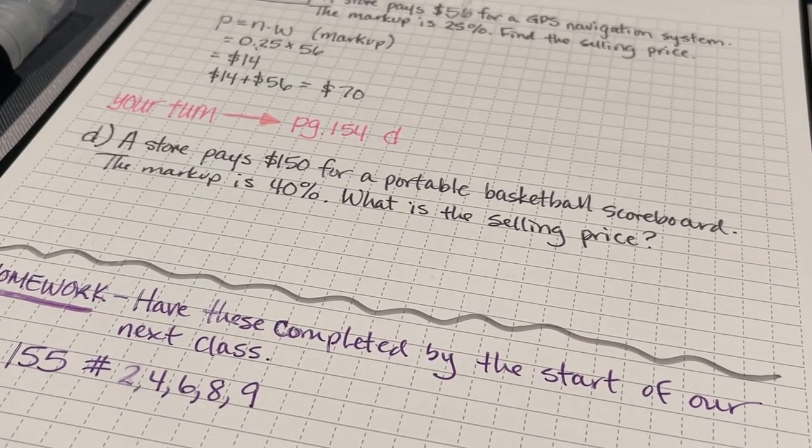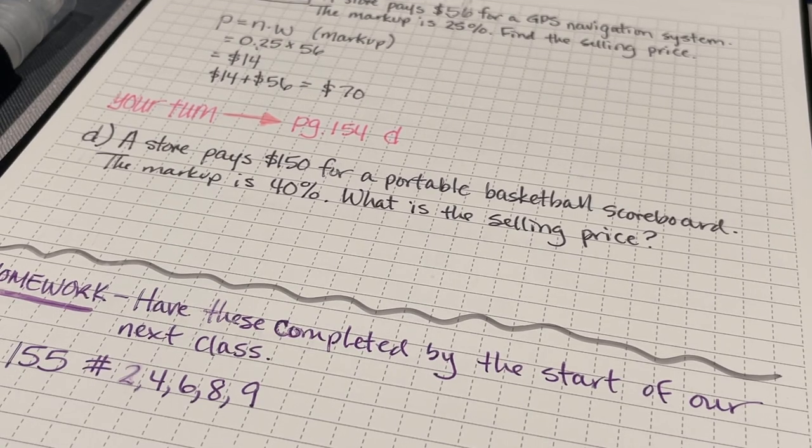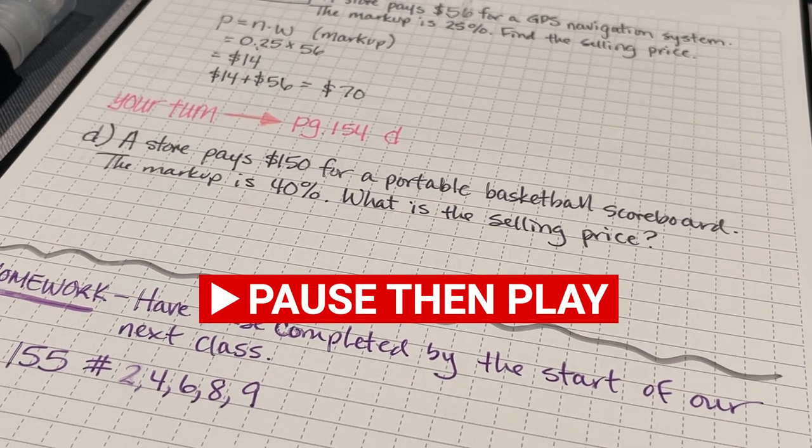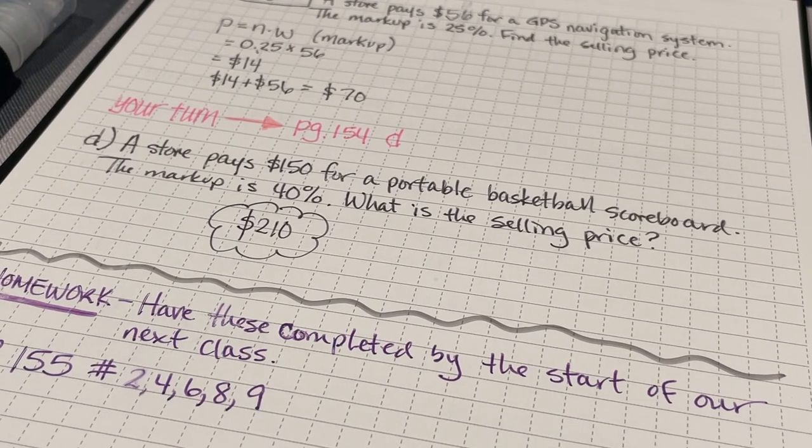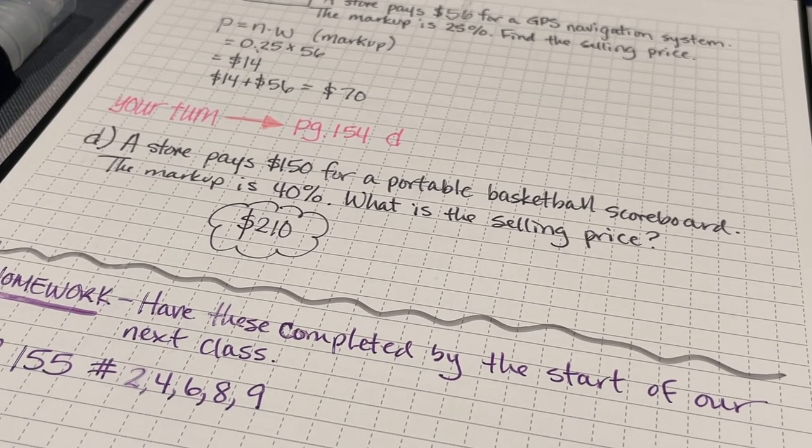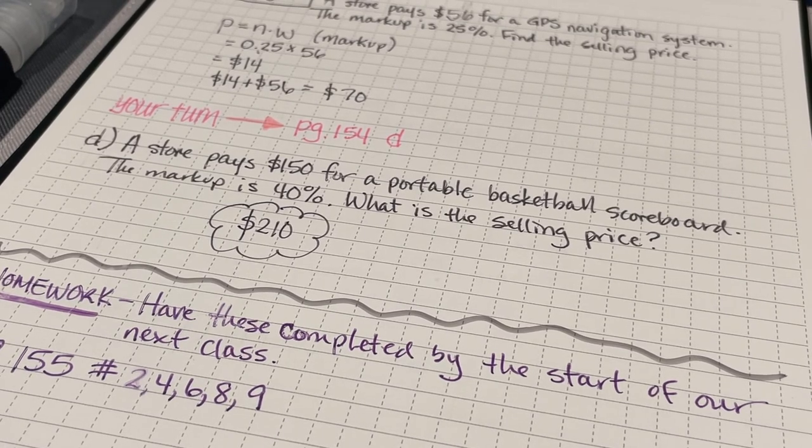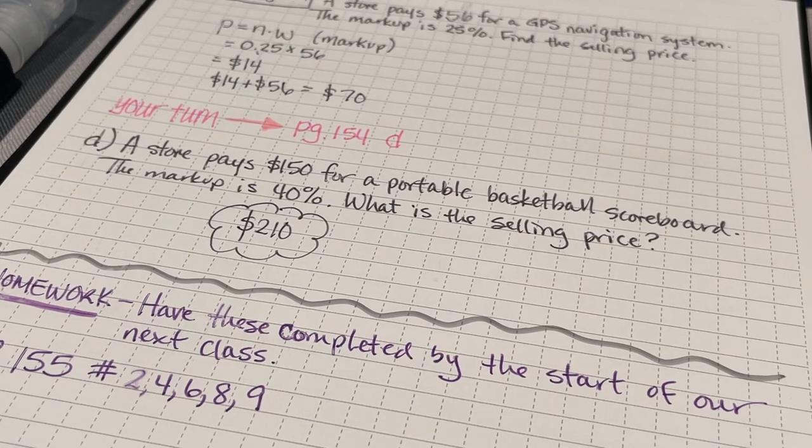I want you to try one more before working on your assignment for class. And that's going to be page 154, problem D. Pause first, then solve the problem, hit play, and see if your answer matches mine. The store that paid $150 for a portable basketball scoreboard and marked that up by 40%, the selling price is $210.